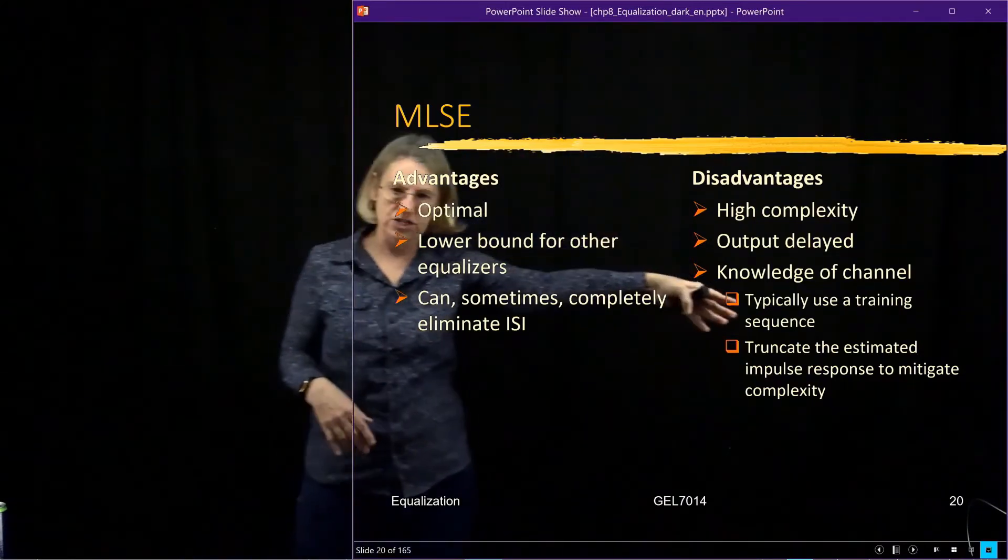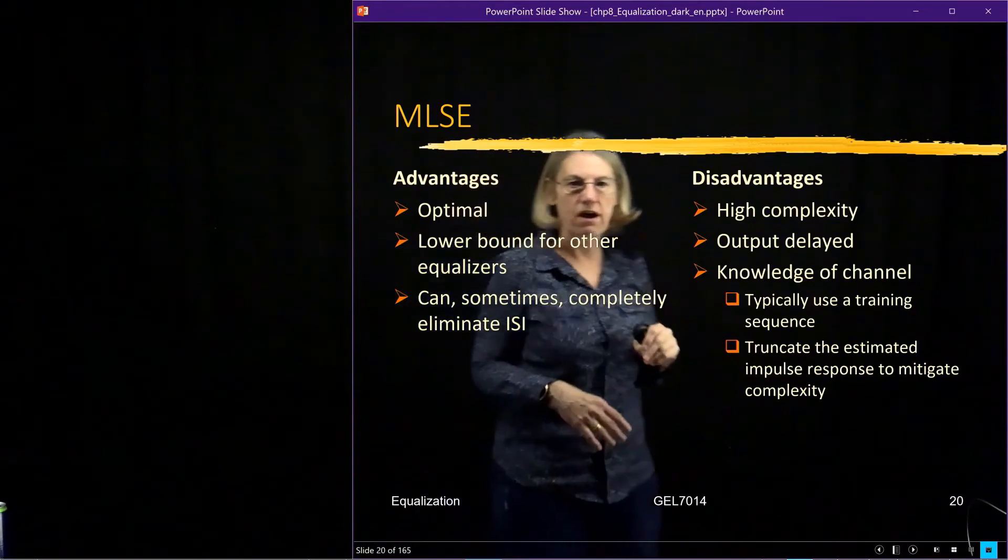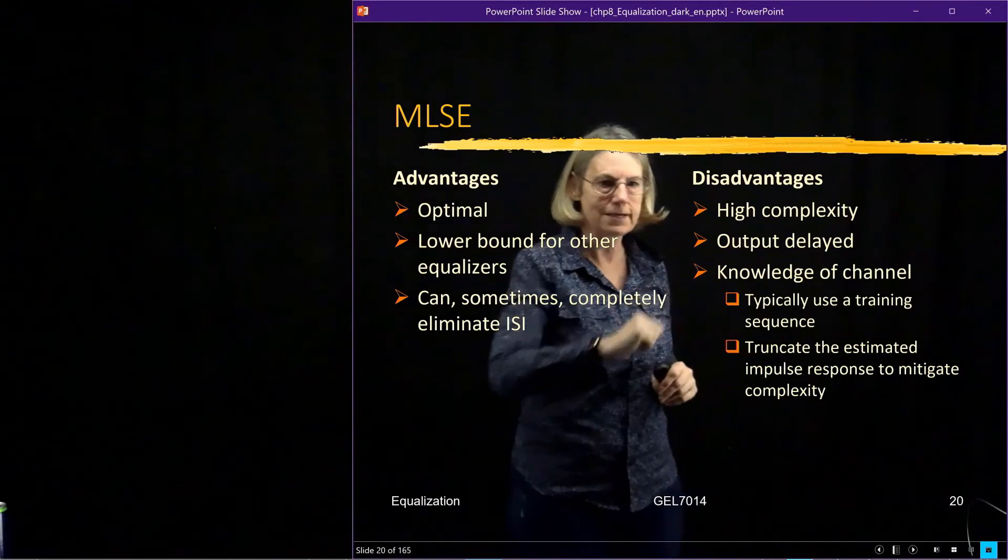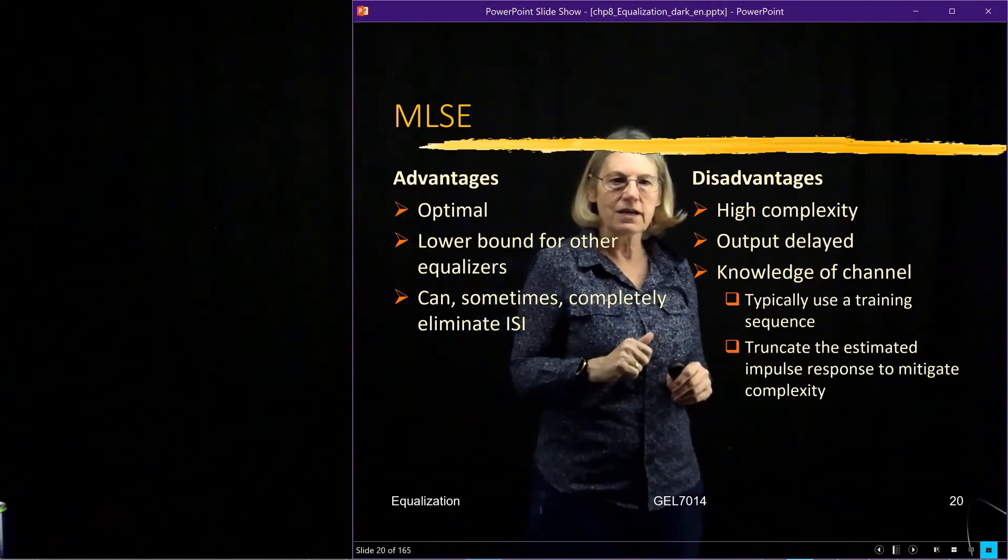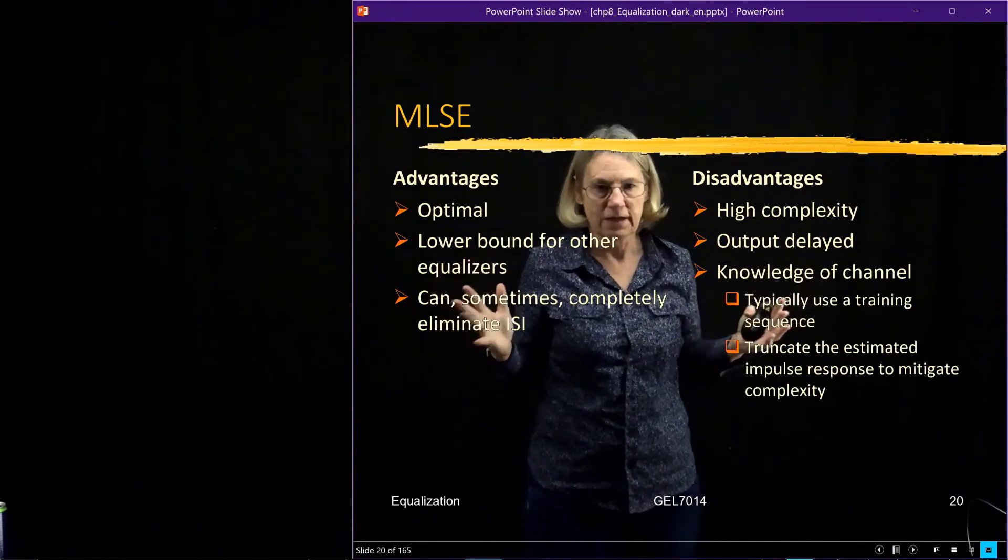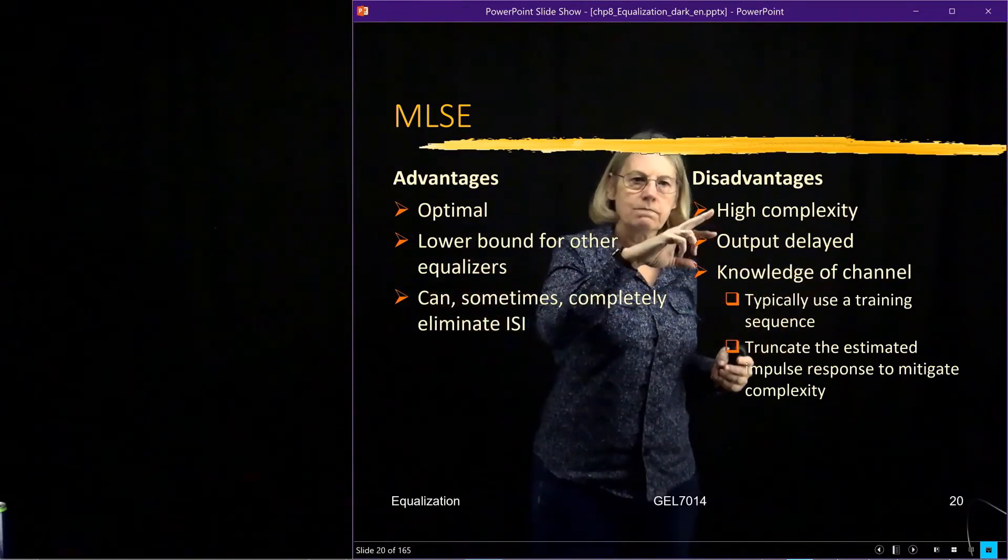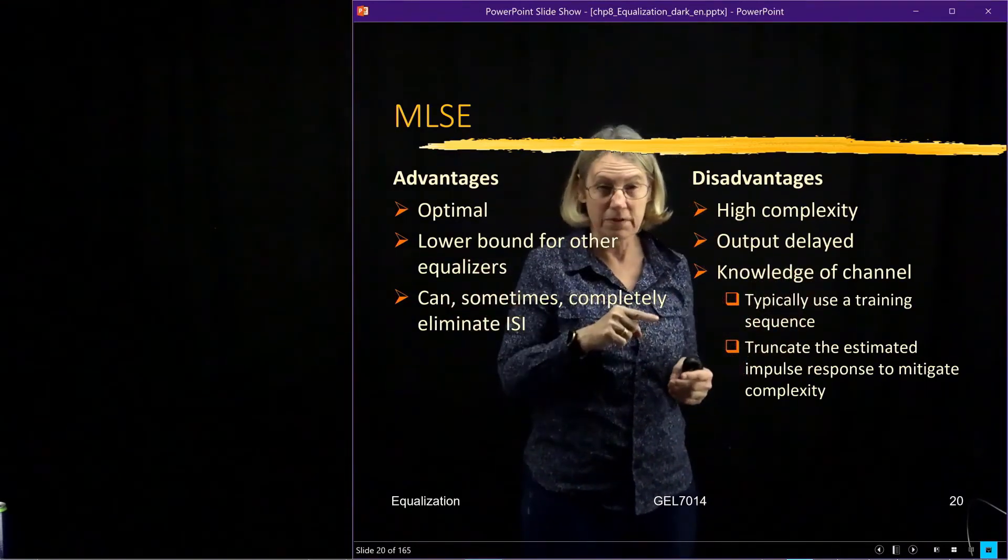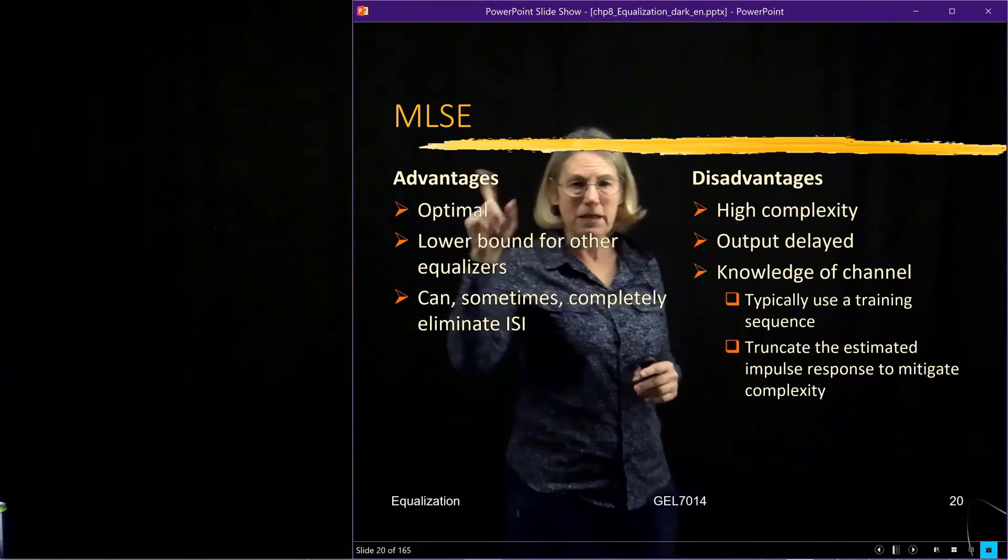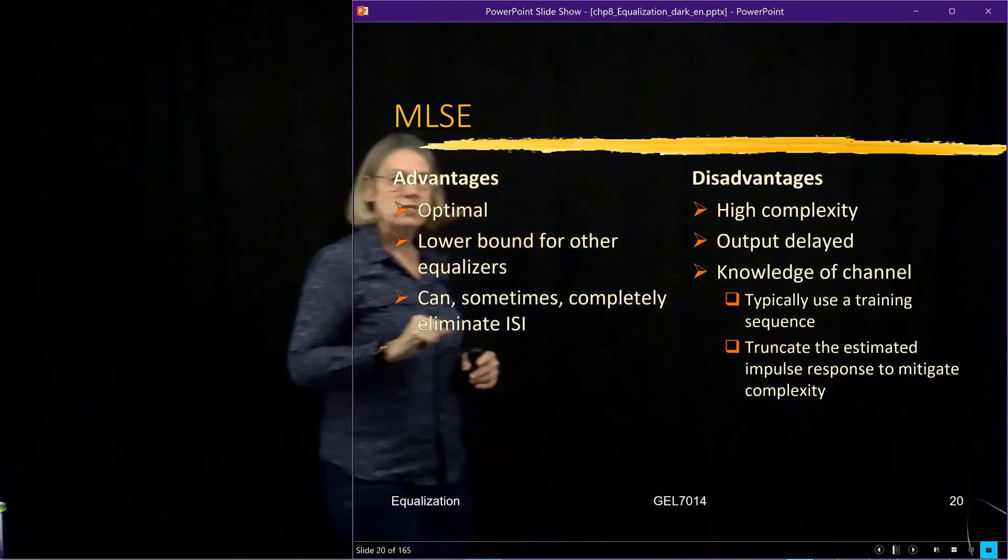So what are the disadvantages? Of course, the disadvantages are that it is high complexity. For sure, that's the disadvantage of MLSE. Sometimes it's just impossible. I mean, we don't have electronics that can do it in real time or even in really slow time. It really blows up very fast. Also, another disadvantage of using the MLSE is a delay because, remember, I have to look at all of the sequences, and if the memory is really long, I have to wait.